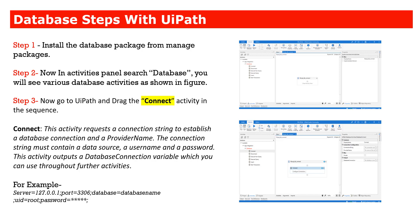In UiPath Studio, the first thing you need to use is the Connect activity in a sequence. This activity requests a connection string — you need to tell it which database to connect to and what the provider details are. For example, to connect to MySQL or MariaDB, you use the connection string provided at the bottom. All you need to give is server name, port, database, user ID, and password.